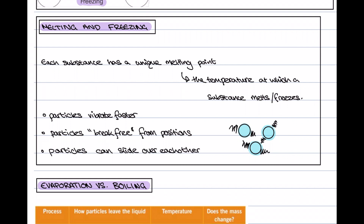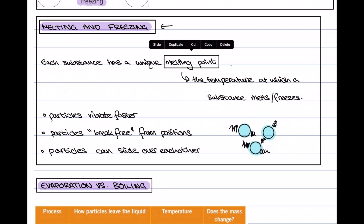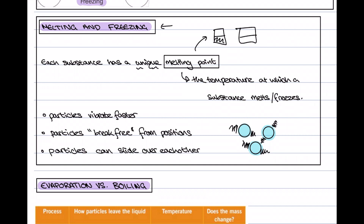Now we know the names of the state changes, let's look more in depth at what happens to the particles. We're going to look at melting and freezing as our example. Each substance has a unique melting point — it's the temperature at which the substance will either melt or freeze, the point at which we see a solid-to-liquid or liquid-to-solid state change. Because each substance has a unique melting point, we can use this to identify different substances. For example, with two beakers of unknown substances A and B, we can melt both and see at what temperature they melt.